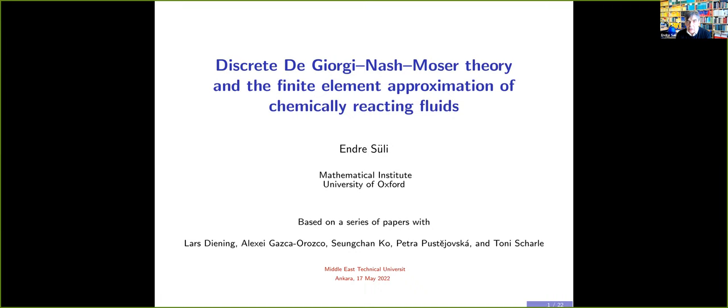The corresponding result here is that you have a sequence of finite element approximations. But unlike Bolzano-Weierstrass, which is stated on the real line and concerns a sequence of real numbers, here we are dealing with a sequence of functions — the sequence of finite element approximations — which live in an infinite dimensional space. The question arises: if you have some bound on the sequence of approximations in this infinite dimensional space, how can you deduce convergence of perhaps a subsequence?